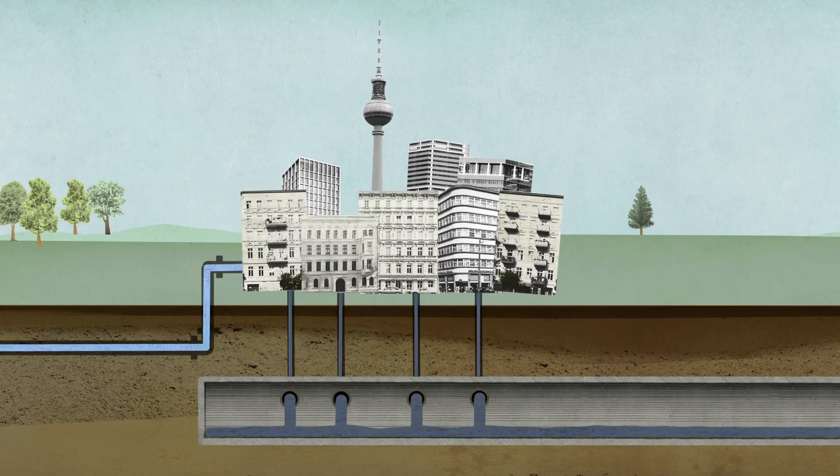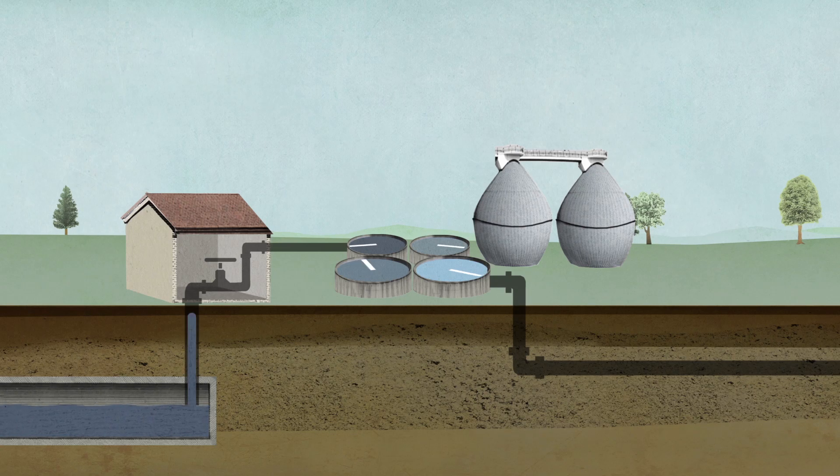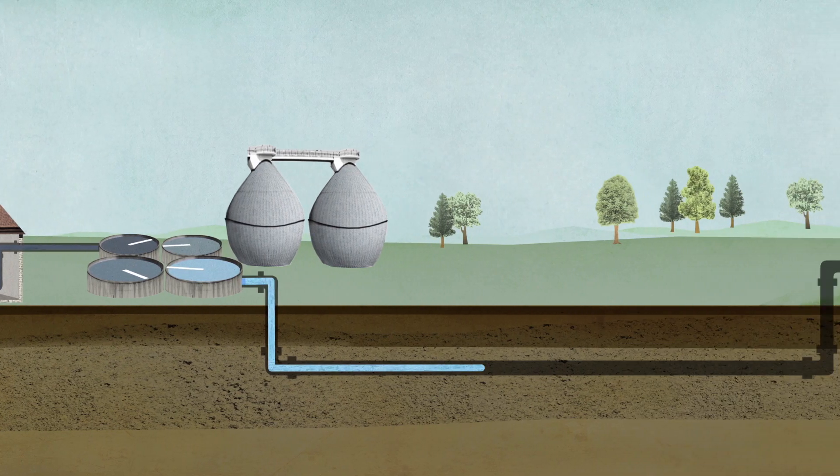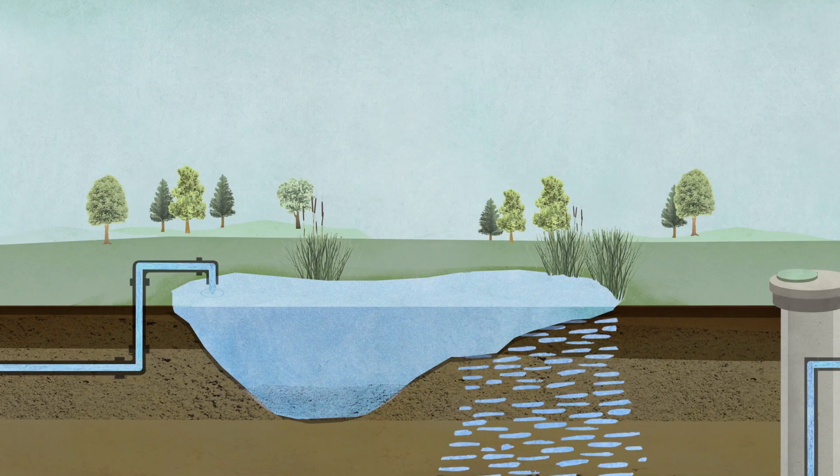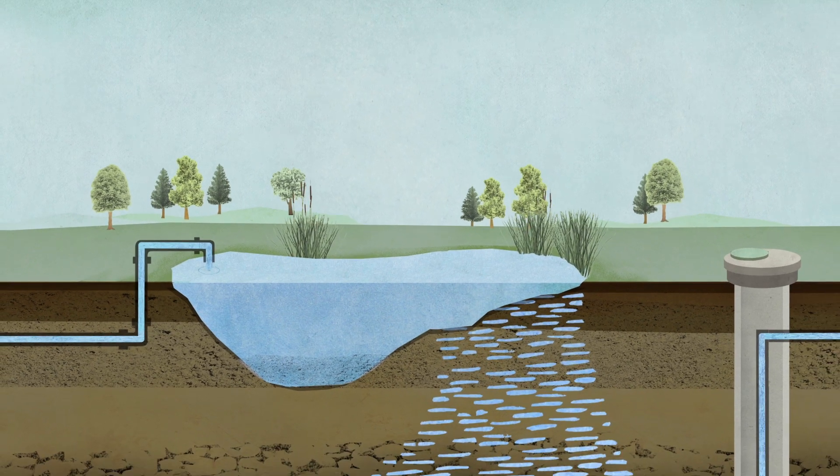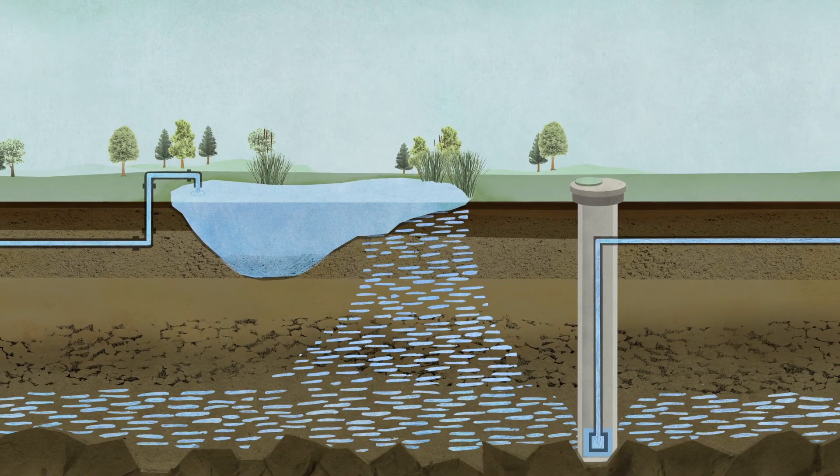After use, wastewater is collected in the sewerage system and pumped to treatment plants. There, nutrients are removed before the water is reintroduced into the lakes and rivers, and through the bank filtration the cycle begins again.